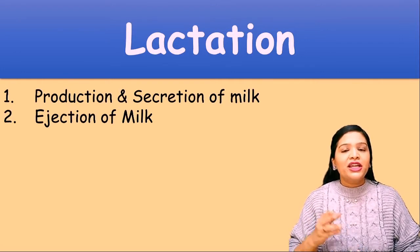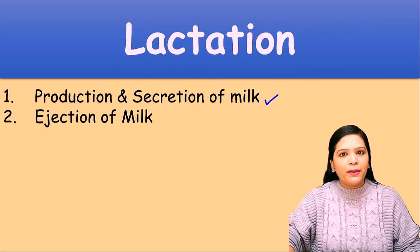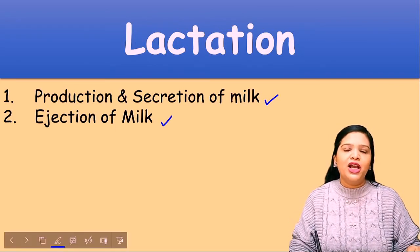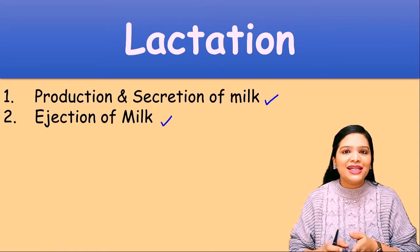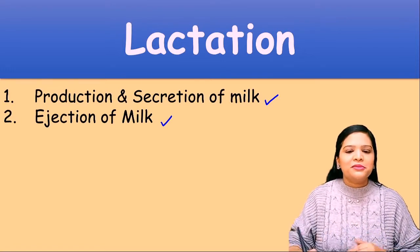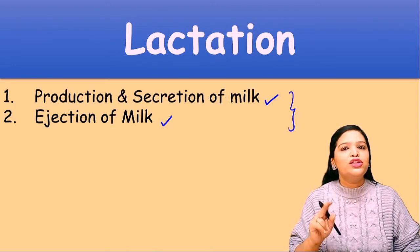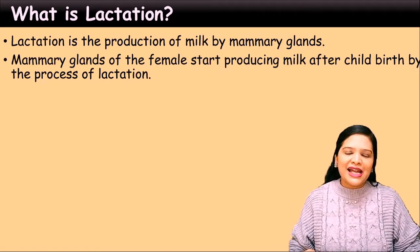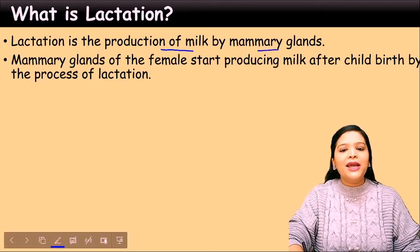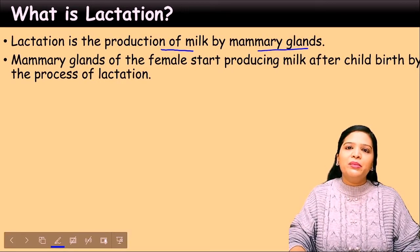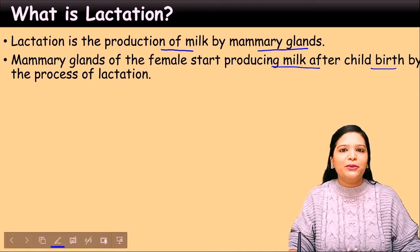Lactation involves two different steps. The first one is the production and secretion of the milk, and the second one is the ejection of the milk. The mammary gland secretes and produces the milk, and then ejects it. So these two steps together are called lactation — it is not a single phenomenon but involves two different mechanisms. Lactation is defined as the production of milk by the mammary glands.